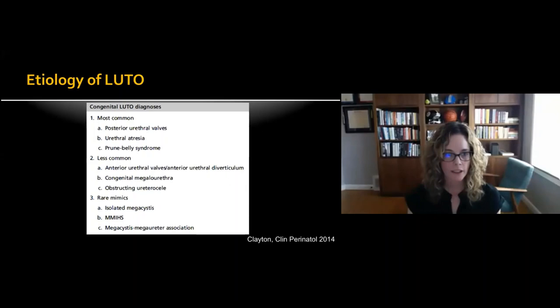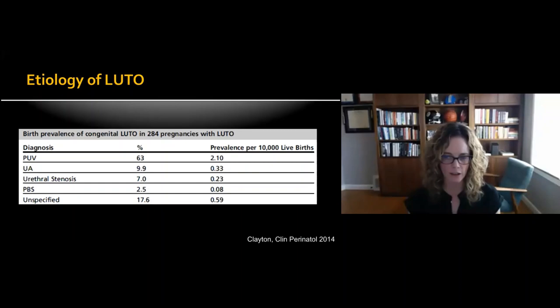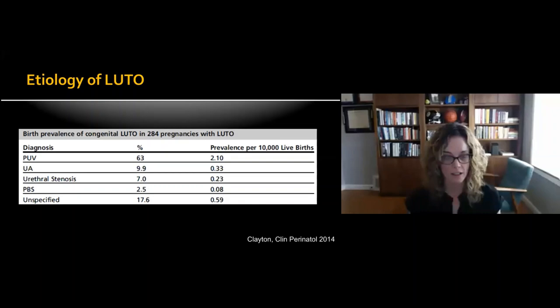LUTO has various etiologies. The most common is posterior urethral valves, which depending on the series ranges from about 50 to 65 percent. Other types include urethral atresia, prune belly syndrome, anterior urethral valves, and obstructed ureterocele. There are also some mimics of lower urinary tract obstruction. A 2014 article by Clayton and colleagues looked at 284 pregnancies and found posterior urethral valves responsible for about 60 percent of LUTO diagnoses.